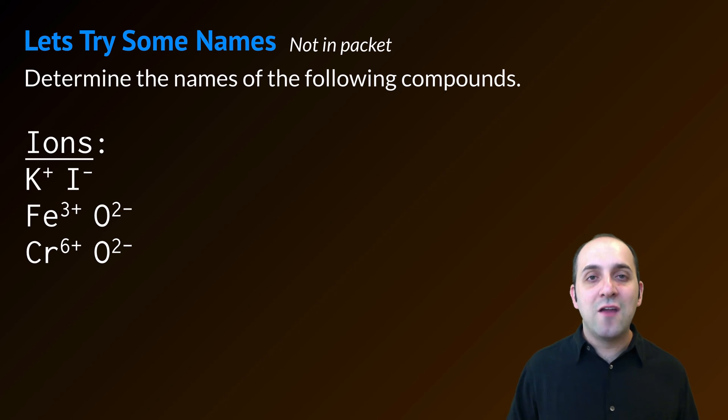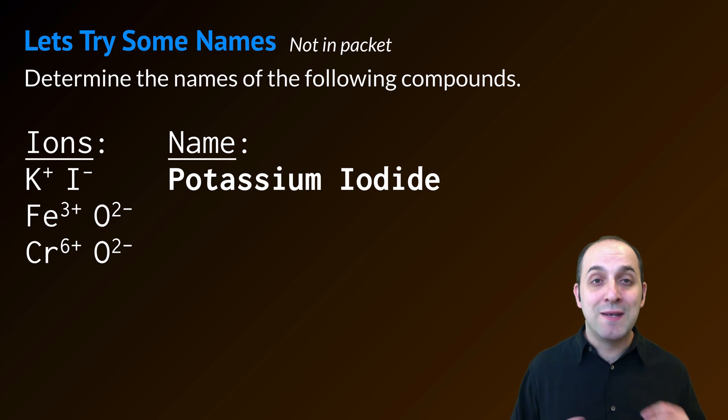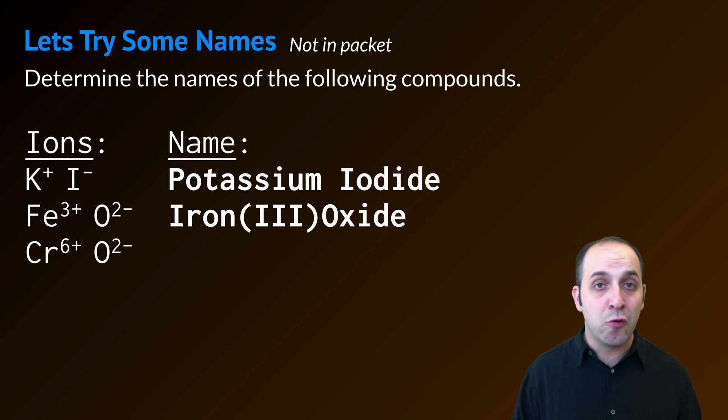Now that I know what the ions are, I can figure out their names pretty easily. The name of the compound made out of K+ and I- is going to be potassium iodide. I don't have to use the stock system because potassium only has one possible oxidation state. Fe2O3 is going to be iron three oxide. If we go and look at iron on the periodic table, we see that it has two possible oxidation states. So I have to specify that it's the +3 version in iron three oxide.